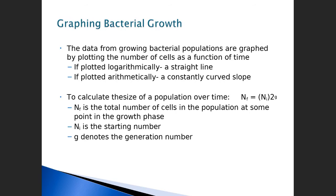The population equation is right over here. You can see it's Nf is equal to Ni times 2 to the g, and that g should be a superscript. So the equation is: the final population is equal to the initial population, times 2 — and 2 is a constant for binary fission — to the number of generations.